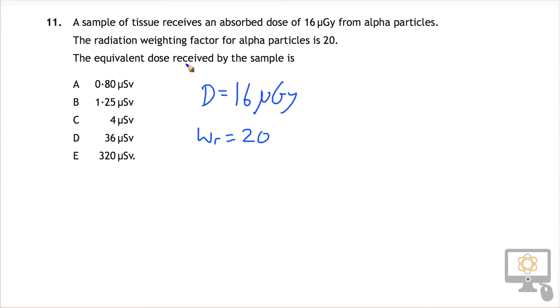What's the equivalent dose? Well, the formula for equivalent dose is H. Equivalent dose is equal, oops, that didn't turn out so well, is equal to the absorbed dose times the radiation weighting factor.